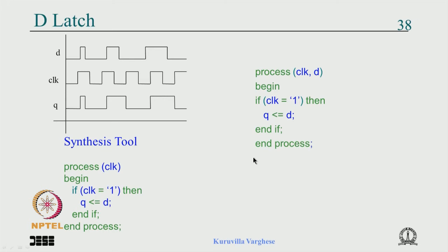We have looked at the latch code and the flip-flop code — there are some intricacies you need to understand. I suggest you grasp this concept clearly, because we are coming to the core part of VHDL as far as synthesis is concerned. We have completed the combinational circuit portion — with/select, when/else, if/then, case/when, loops — and now we are in the sequential circuit part, where the main elements are registers and combinational logic.